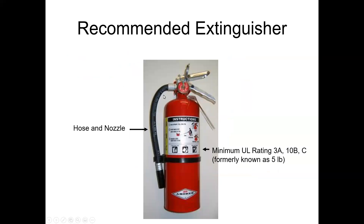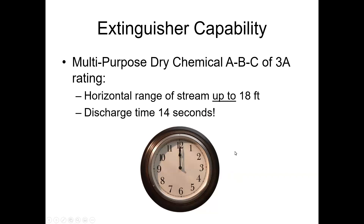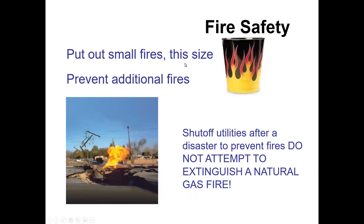I recommend buying an extinguisher with a hose and nozzle — we can all aim a hose. The minimum rating I recommend for home use is 3A 10BC, roughly known as a five-pound extinguisher. Most fully charged extinguishers can shoot up to 18 feet and discharge for 14 seconds — but that's not a lot of time fighting a fire. That's why CERTs only fight very small fires, about the size of a trash can, and usually only incipient fires.